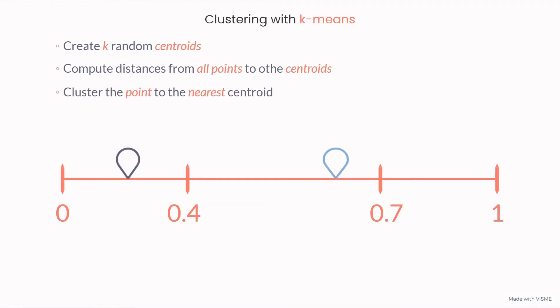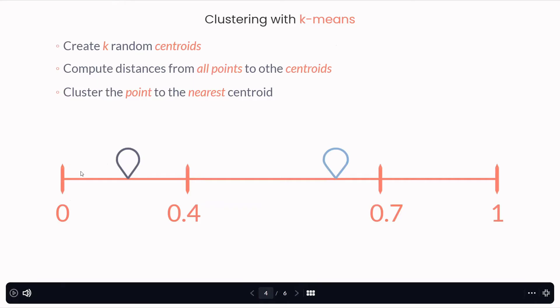Next, I'm going to claim that the group that each point belongs to is the one nearest, it is to the nearest centroid. For instance, on this example, I'm going to claim that 0.0 and 0.4 belong to this centroid, to this group. And I'm going to claim that 0.7 and 1 belong to this group.